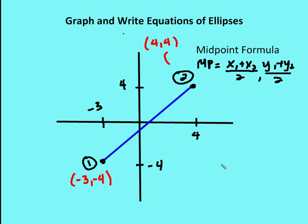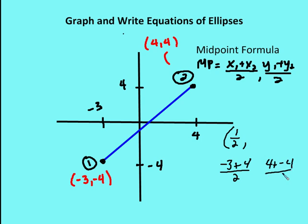So the first value I get for the x value of the coordinate is negative three plus four over two, which gives me one half. And then the y values added and divided by two: four plus negative four divided by two, which gives me zero over two, which is zero. So the midpoint between the two coordinates is (1/2, 0).